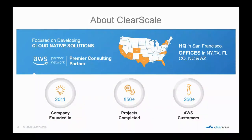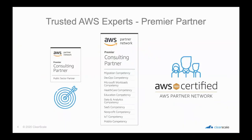A little bit about ClearScale to get started. ClearScale is an AWS Premier Consulting Partner. We started in Silicon Valley in 2011 and have completed over 850 projects with more than 250 Amazon customers. We are headquartered in San Francisco with offices in New York, Texas, Florida, Colorado, North Carolina, and Arizona. We have 10 AWS partner competencies such as data analytics, migrations, DevOps, and SaaS. Our engineering team holds over 100 AWS certifications.